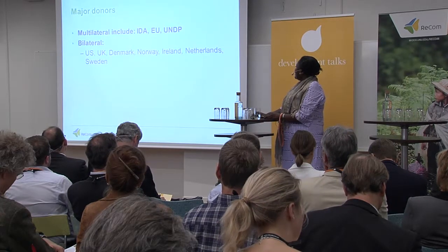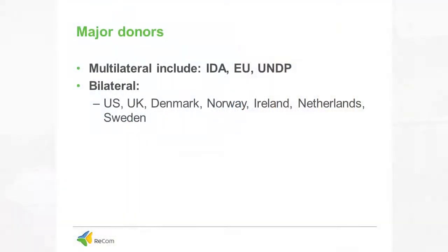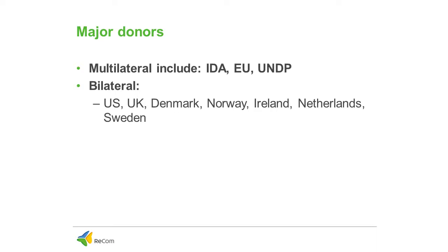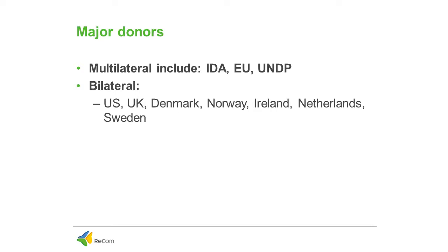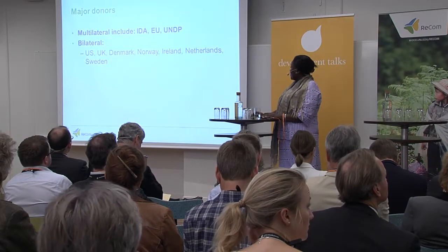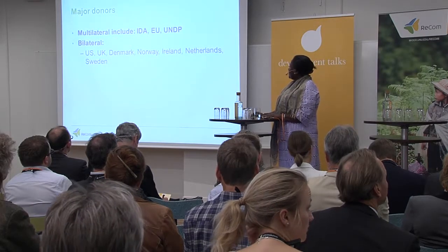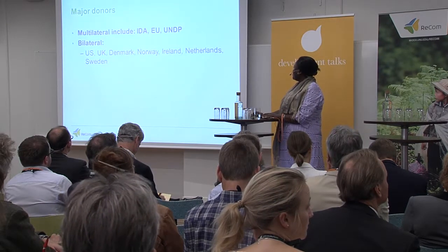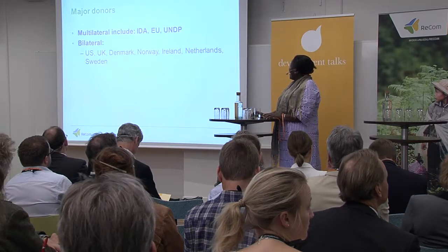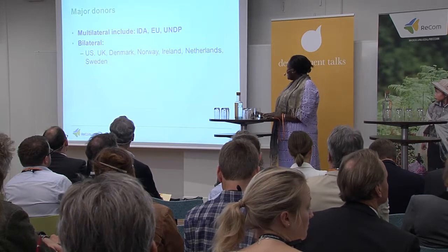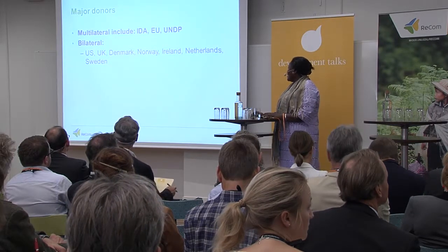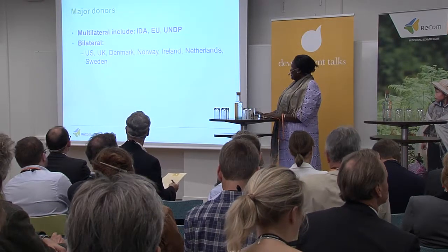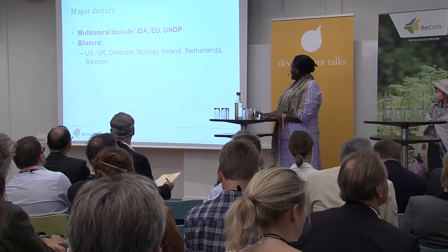The study examined the effects of the 10 major donors for Uganda. Uganda has over 40 donors operating in the country, but the 10 largest contributors were selected. These are the World Bank, the European Union, UNDP, the US, the UK, Denmark, Norway, Ireland, Netherlands, and Sweden.